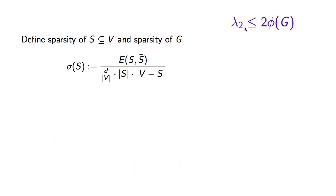We are going to begin by proving the easier direction — the one showing that the expansion is at least half of λ₂. In order to prove this inequality, we are going to introduce one more concept, which is that of the sparsity of a cut in a graph. If S is a subset of vertices of a graph, the sparsity of S is the number of edges that leave S (going from S to the complement of S), divided by the total number of pairs of vertices that are separated or become unreachable if these edges are removed.